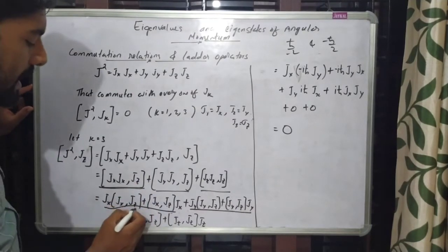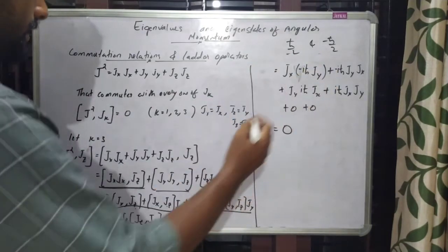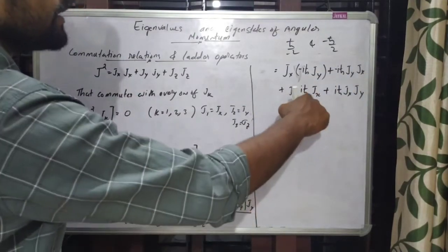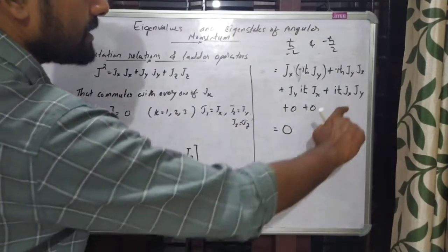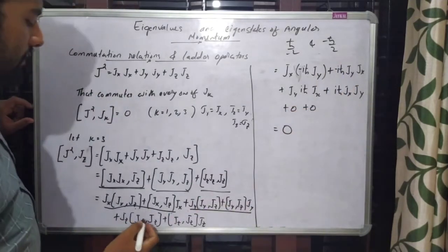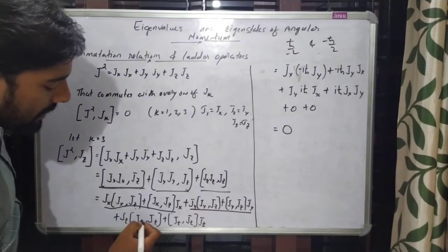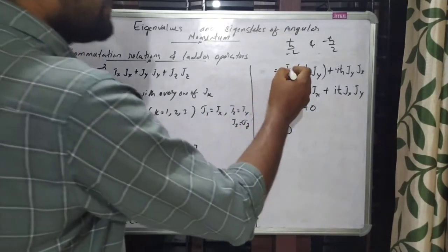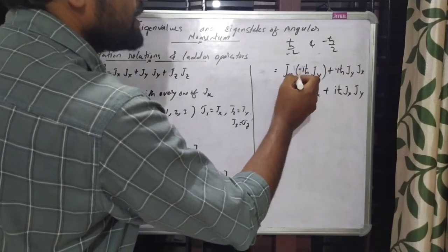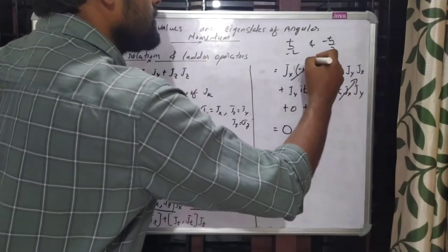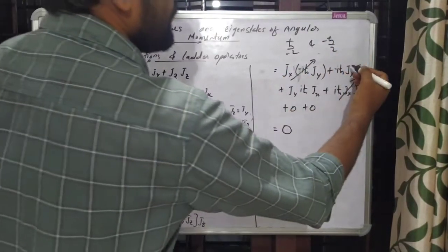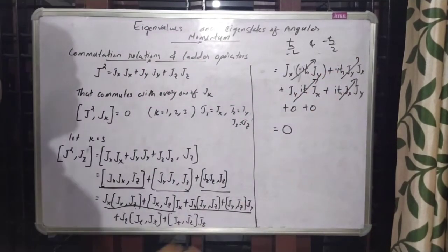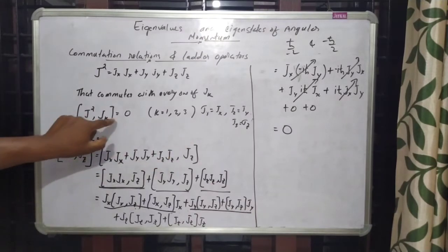We know Jx[Jx, Jz] = −iℏJy and [Jx, Jz]Jx = −iℏJyJx, while [Jy, Jz] = iℏJx and [Jy, Jz]Jy = iℏJxJy. The commutator [Jz, Jz] = 0. The terms −iℏJxJy and +iℏJxJy cancel, and −iℏJyJx and +iℏJyJx cancel, giving zero. So we have proved [J², Jk] = 0, and the same holds for k = 1 and k = 2.